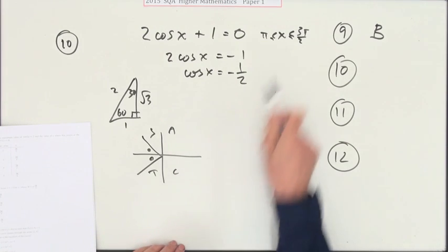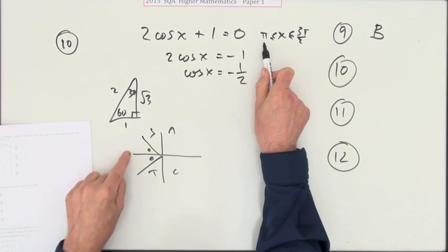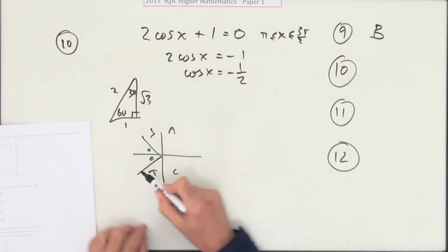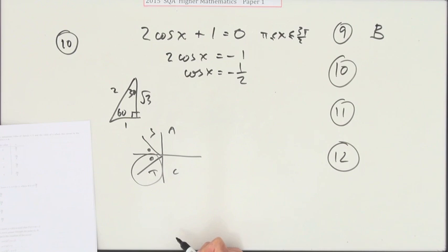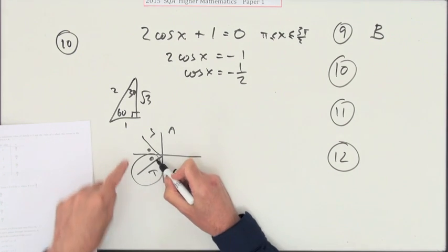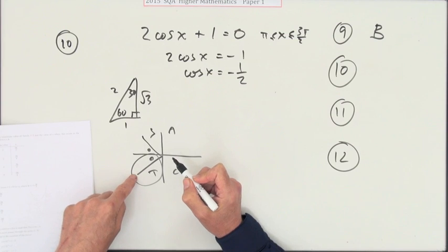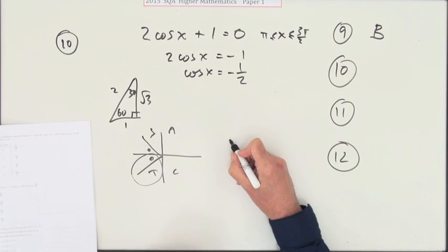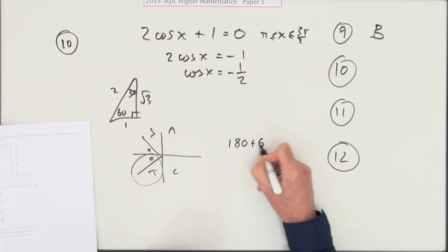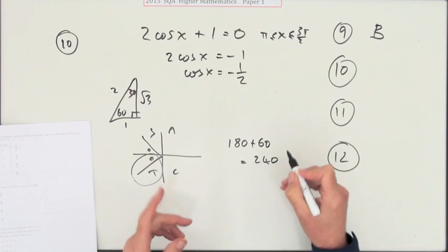So I've got two choices. This says it has to be beyond π, beyond 180, so I want the one in this third quadrant. So I'm looking for the angle which will be 180 plus 60.